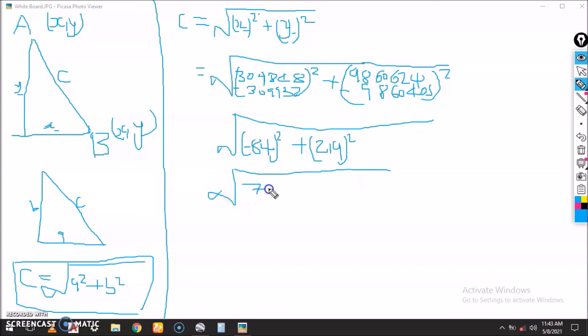So this one gives square root of 7056 plus 47961. So our C is square root of 55017.